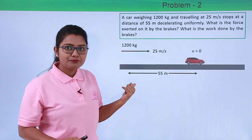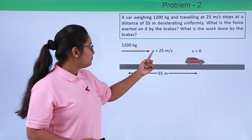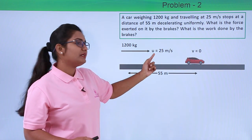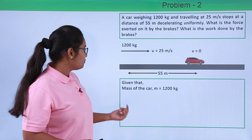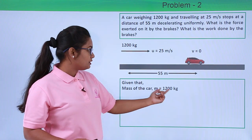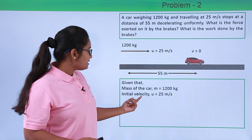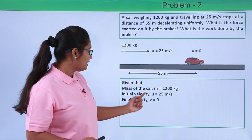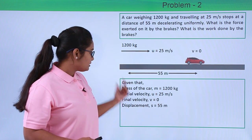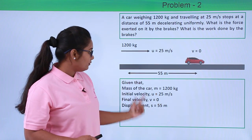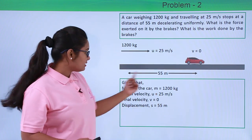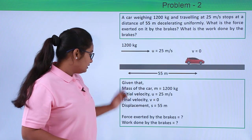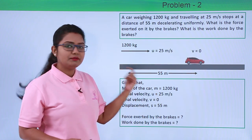Since the car has come to a stop, the final velocity v equals zero, and the initial velocity u equals 25 meters per second. Let us list out what is given: mass of the car is 1200 kilograms, initial velocity u = 25 meters per second, final velocity v = 0, and displacement s = 55 meters. We need to find the force exerted by the brakes and the work done by this force.